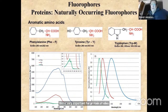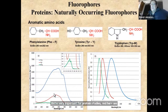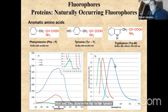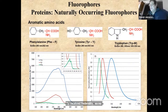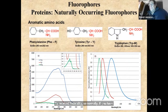Here we see on the left the extinction coefficients for tryptophan, tyrosine, and phenylalanine — tryptophan dominates. On the right we see the emission spectra of tryptophan, tyrosine, and phenylalanine. Normally, if you have tryptophan in a protein, it will dominate the emission.